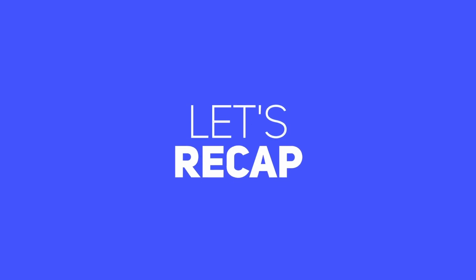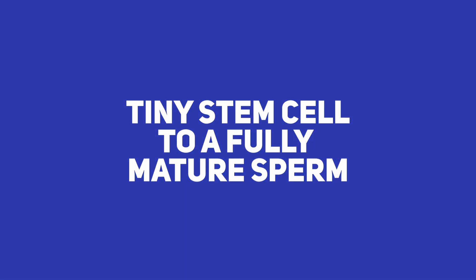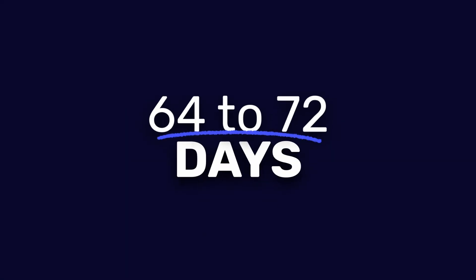So let's recap. From a tiny stem cell to a fully mature sperm takes about 64 to 72 days. That's quite a journey.